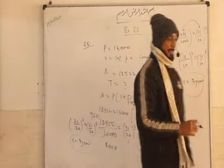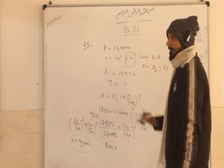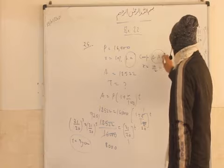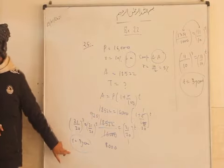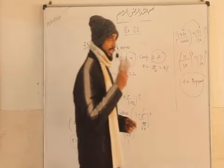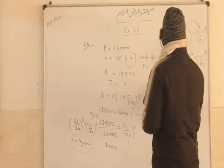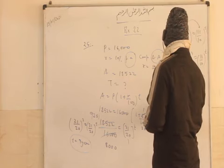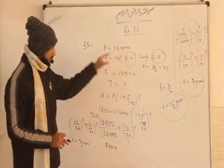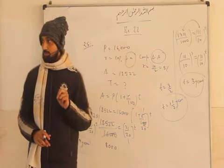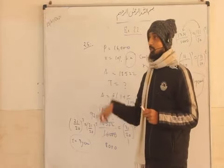Here one important thing: T equals 3 refers to 3 conversion periods, not 3 years. Since the interest is compounded semi-annually, there are 2 conversion periods per year. So 3 conversion periods means 3 divided by 2, which equals 1.5 years. Whenever compounded semi-annually is given, the total conversion periods must be divided by 2 to get the actual time in years.